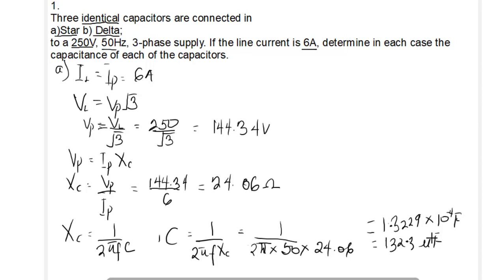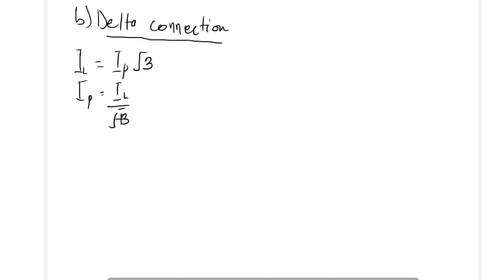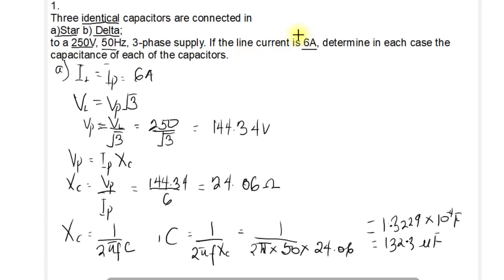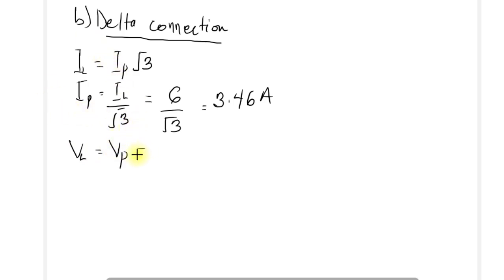Now for the delta connection, the line and phase currents are related by IL = IP × √3. Making IP the subject, IP = IL / √3 = 6 / √3 = 3.46 amperes. In a delta connection, the phase voltage and line voltage are always the same, so the phase voltage equals 250 volts.